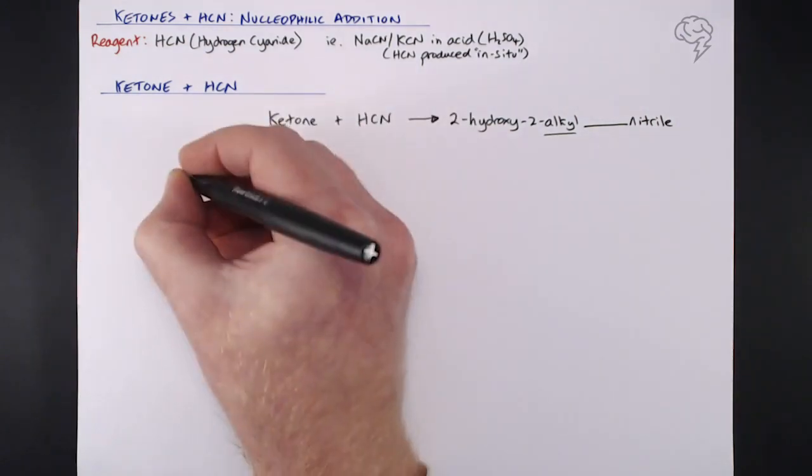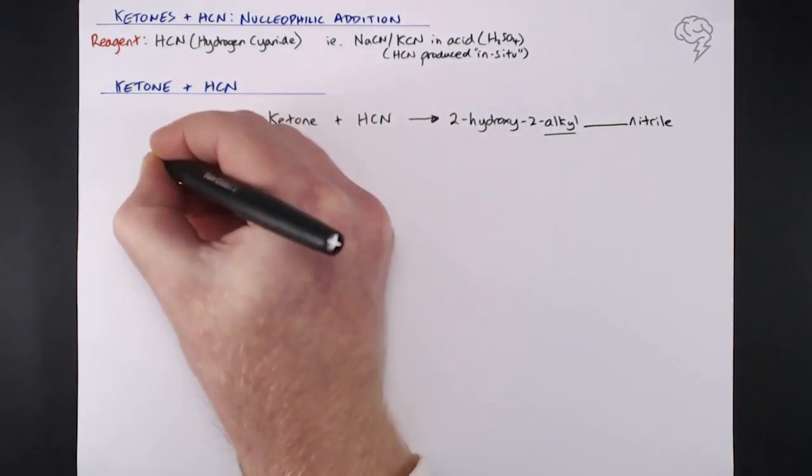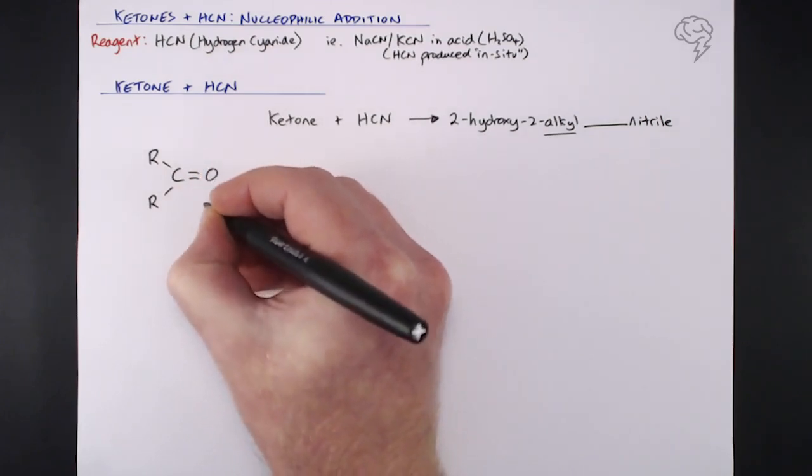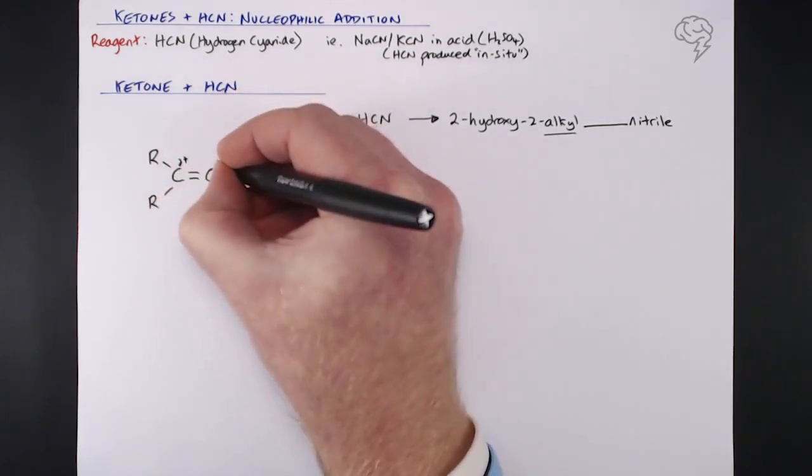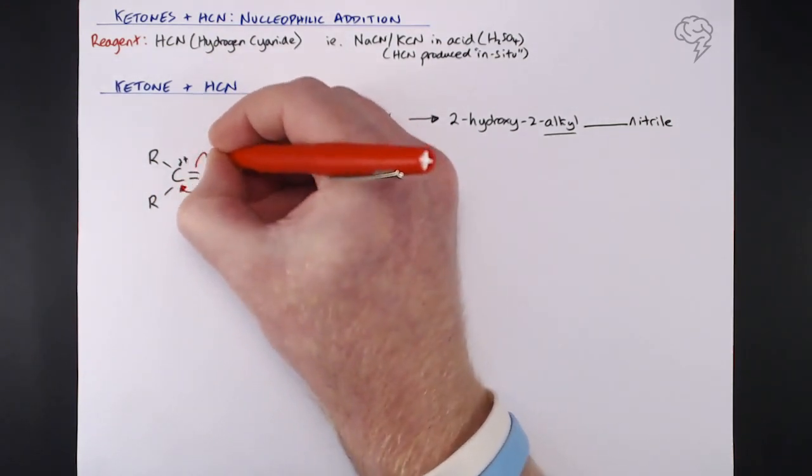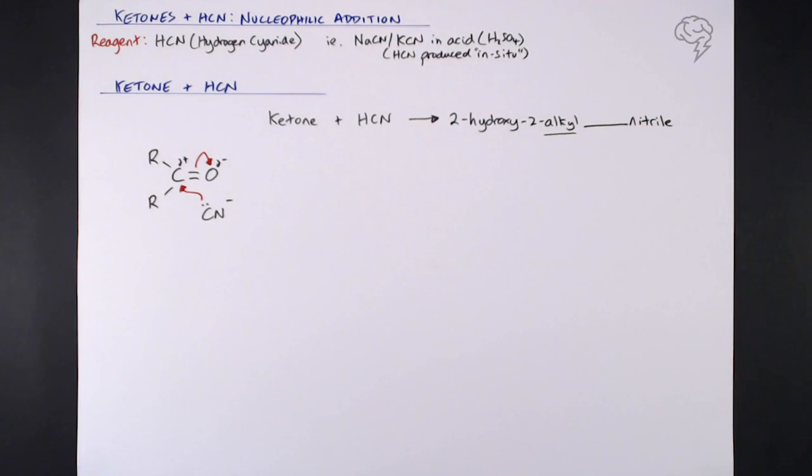With our mechanism we draw out the ketone group, but this time we've got two R groups because that carbonyl is in the middle of a carbon chain. We draw nice big dipoles and lone pairs on the cyanide, and two really clear curly arrows to show the first two parts of the mechanism.